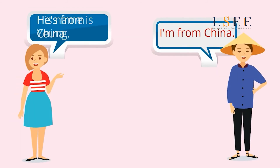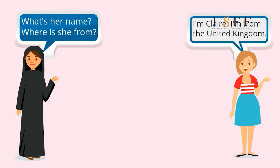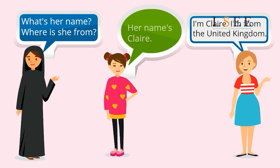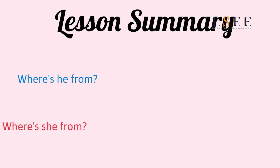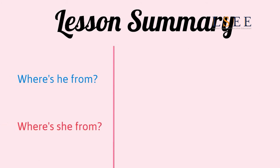What's his name? Where's he from? His name is Young and he's from China. What's her name? Where's she from? Her name's Claire and she's from the United Kingdom. In this lesson we have learned: Where's he from? and Where's she from?